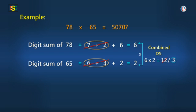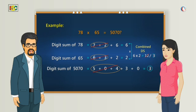And now, the digit sum of the given product, that is 5070, is 5 plus 4 plus 3, that is 9 plus 3, or simply 3. And it is the same as our combined digit sum. So you can see that we can also verify multiplication problems with our checking tool.